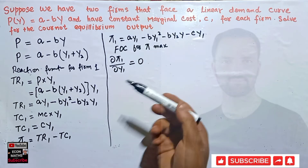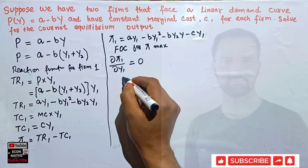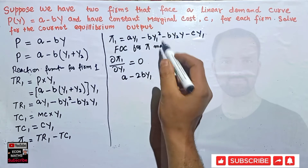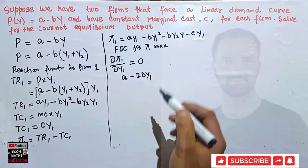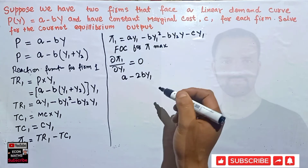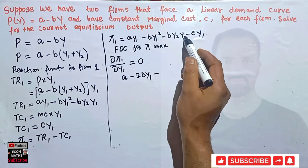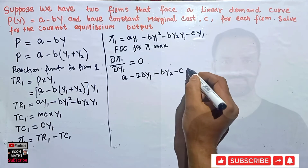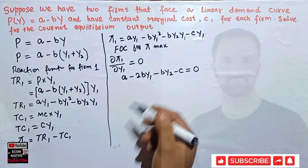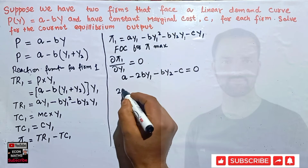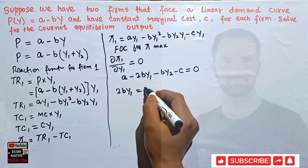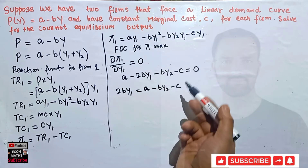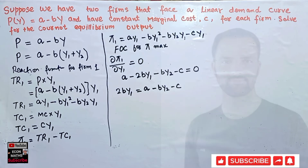Taking the derivative: the derivative of aY1 is a; the derivative of -bY1² is -2bY1; the derivative of -bY2Y1 is -bY2; and the derivative of -cY1 is -c. Setting this equal to zero: a - 2bY1 - bY2 - c = 0. Rearranging, 2bY1 = a - bY2 - c.